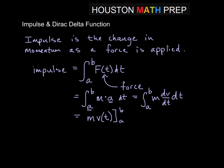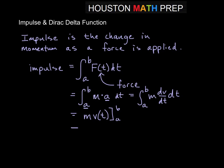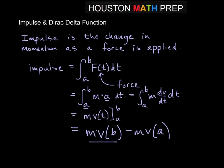More specifically, this equals MV(B) minus MV(A). We could factor out the M's, but we'll leave it there. So the idea is that impulse is the change in momentum between time A and time B.